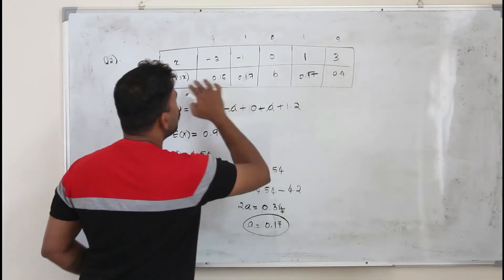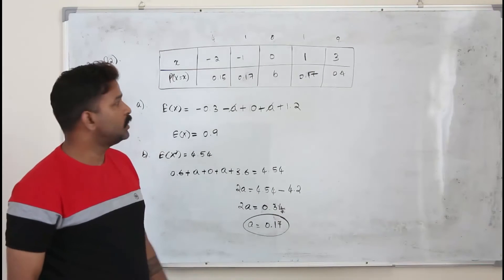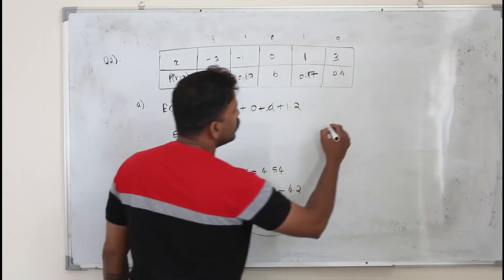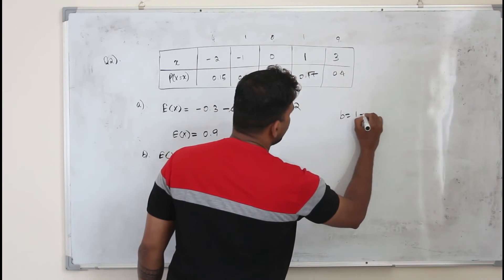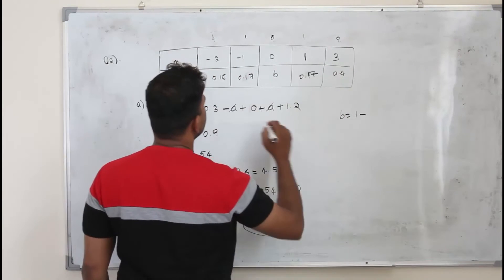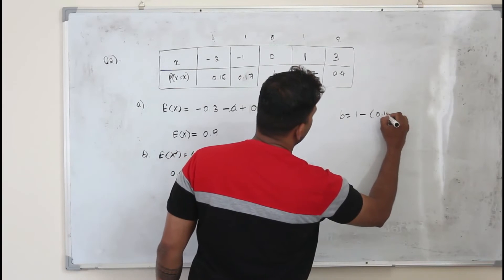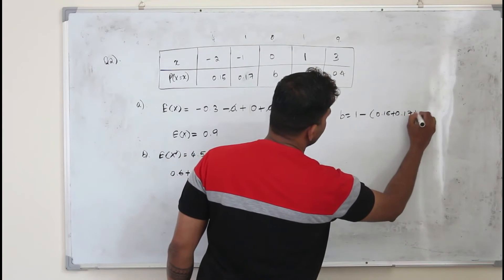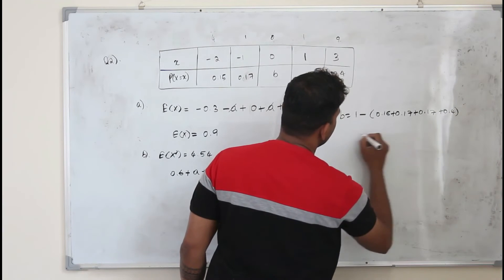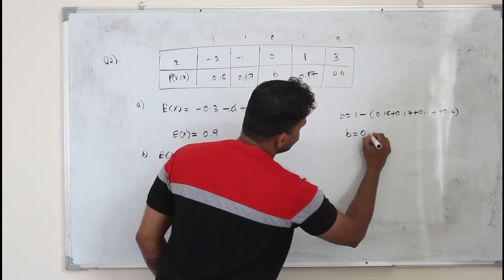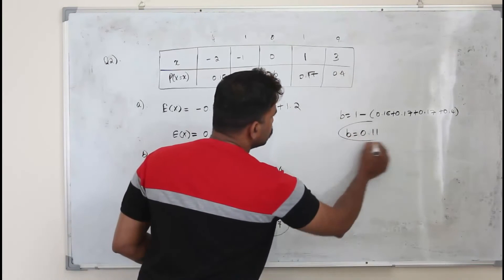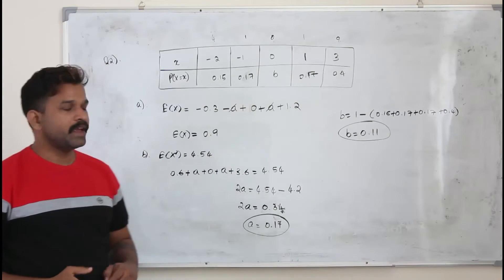Now, the sum of all probabilities will be equal to 1. Using that information you can find B. So B will be 1 minus the sum of all the other probabilities: 0.15, 0.17, 0.17, and 0.4. So B will be 0.11. That's how we get the value of A and B.